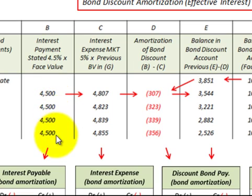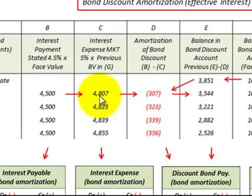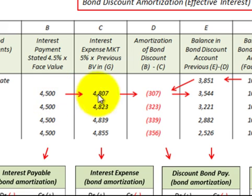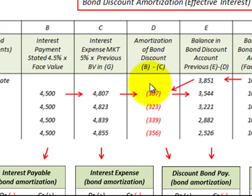Now we have to recognize that interest expense on our income statement, and that's based on the market rate of interest times the carrying value of the bond each period. Then there's this amortization amount — this is how we amortize the interest expense — and that is the difference between the interest payment and the interest expense recognized each period. In this case, $4,500 minus $4,807 for the first period gives us a $307 amortization amount.